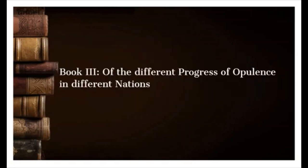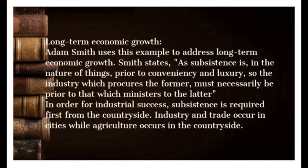Book Three: 'Of the Different Progress of Opulence in Different Nations.' Long-term economic growth: Adam Smith states, 'As subsistence is, in the nature of things, prior to conveniency and luxury, so the industry which procures the former must necessarily be prior to that which ministers to the latter.' In order for industrial success, subsistence is required first from the countryside. Industry and trade occur in cities while agriculture occurs in the countryside.